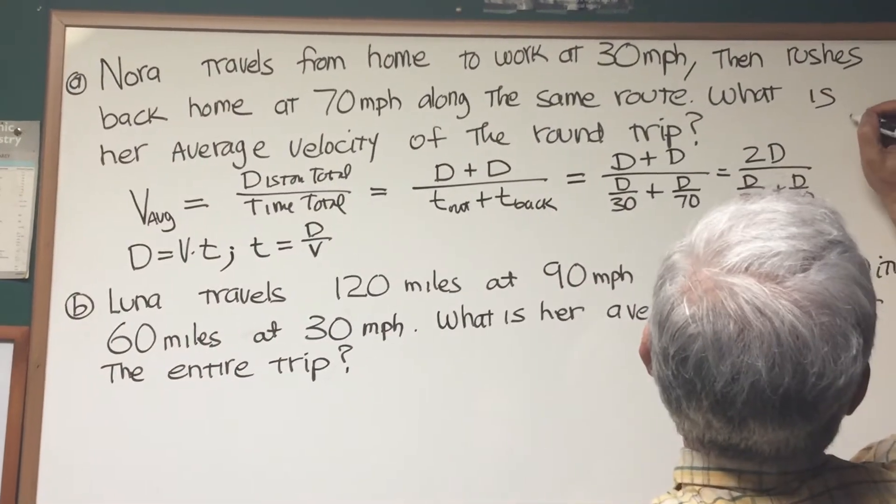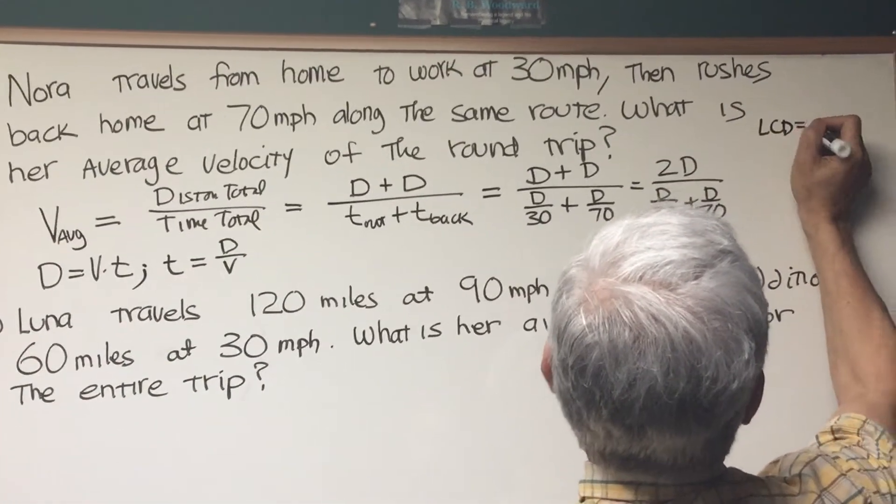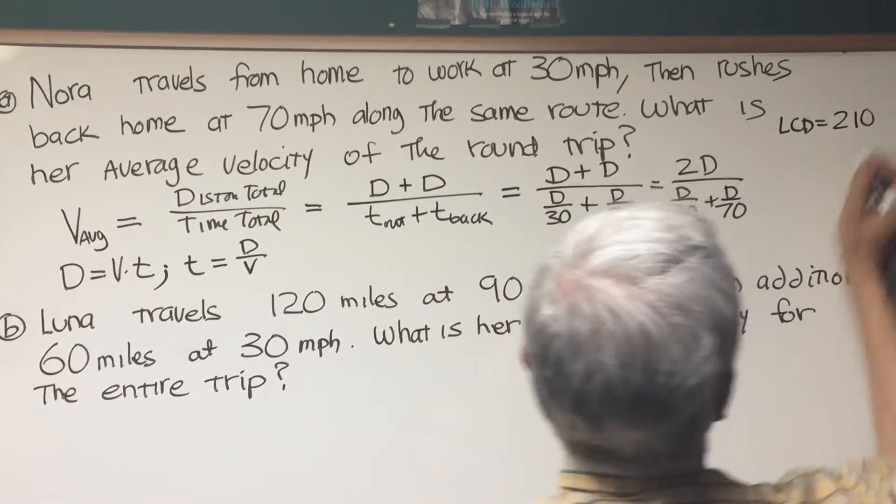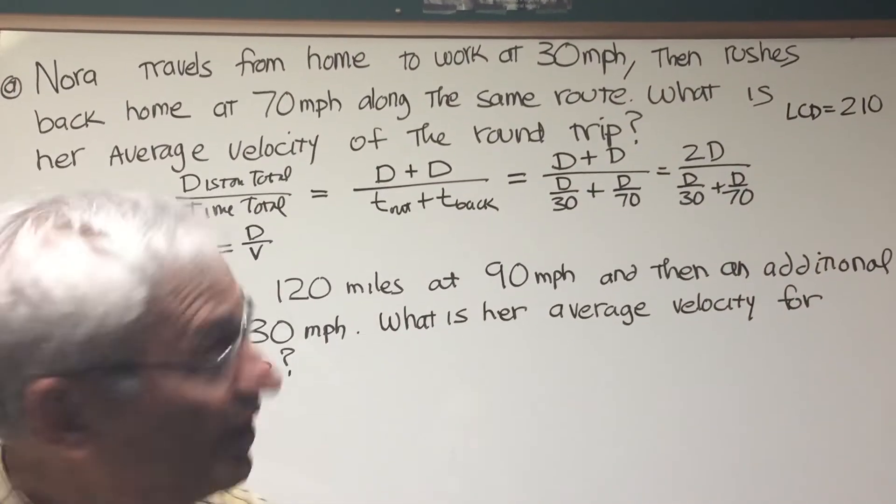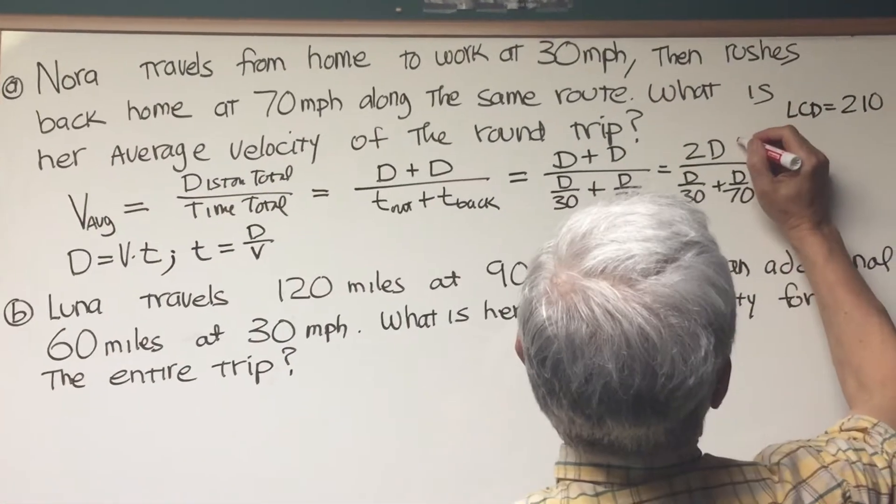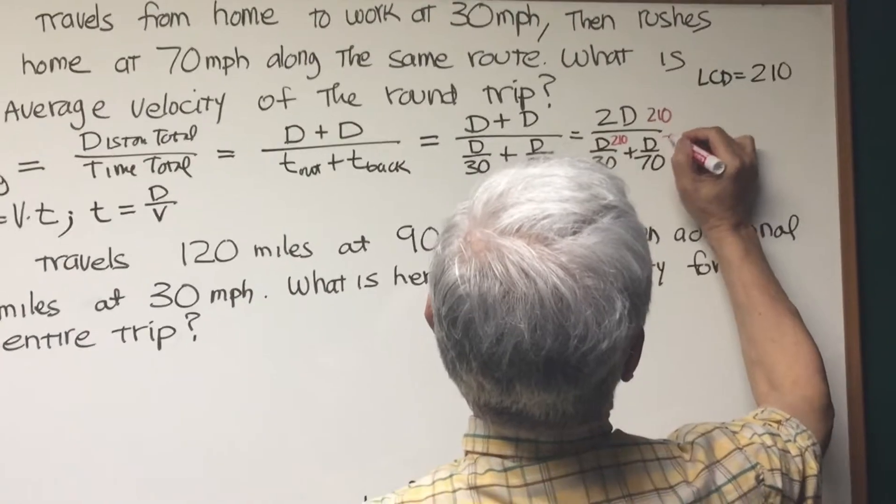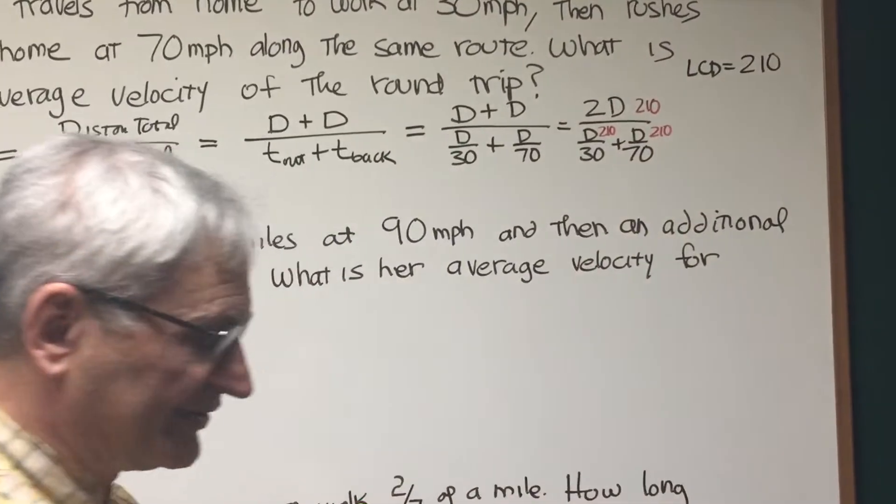The LCD in this case, LCD is 30 times 210. 210, and that means I want to multiply numerator and denominator by 210. 210, 210, and what will that give us?